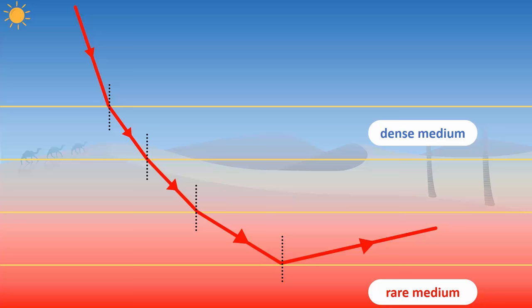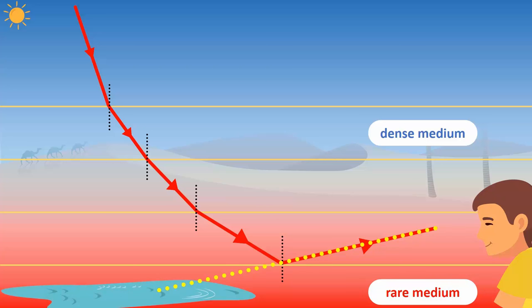When this reflected light reaches our eyes, our eyes trace it backward as a straight line. Hence, the reflection of the blue sky appears on the ground and our brain thinks it is water, thus causing a mirage.